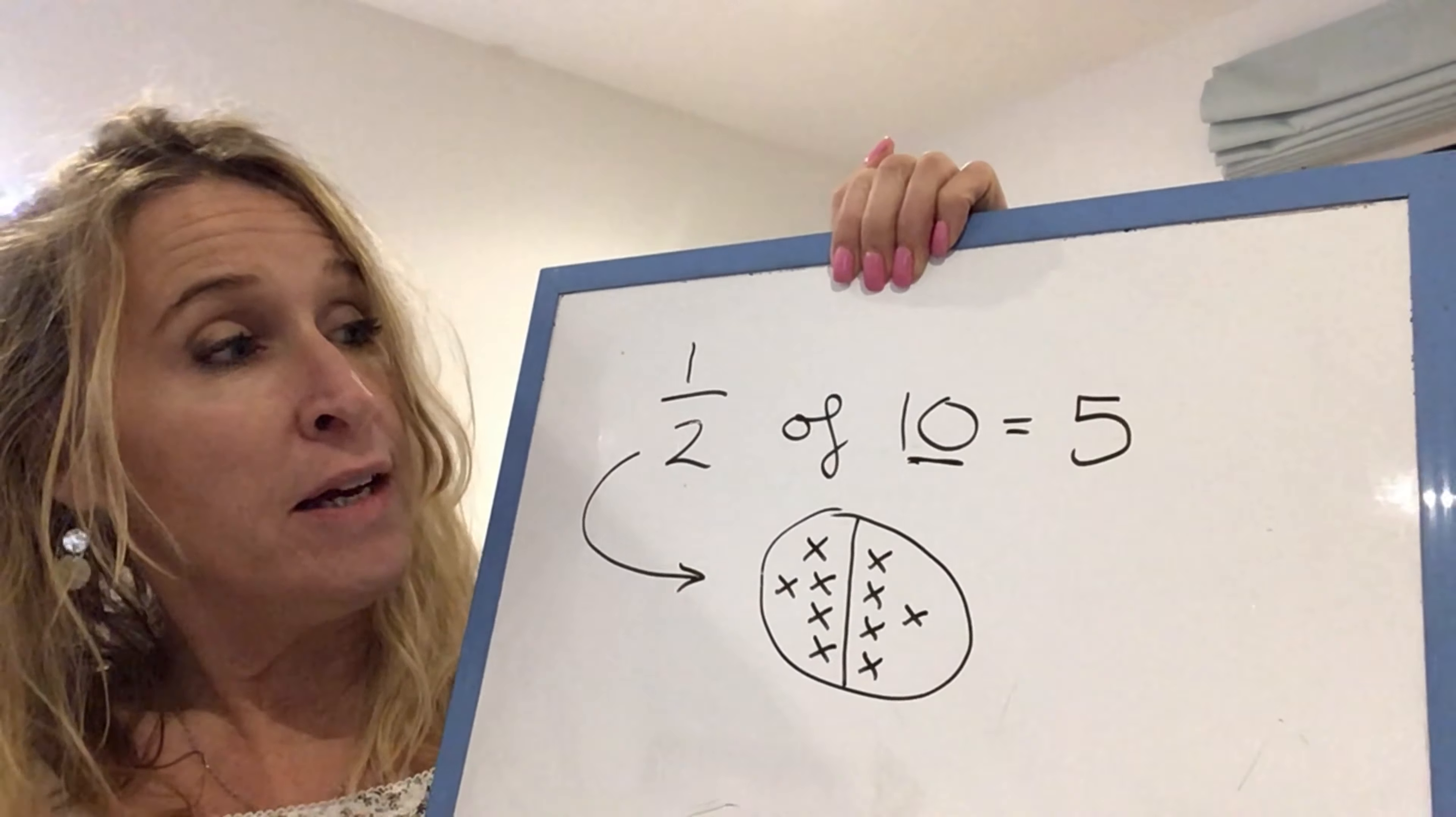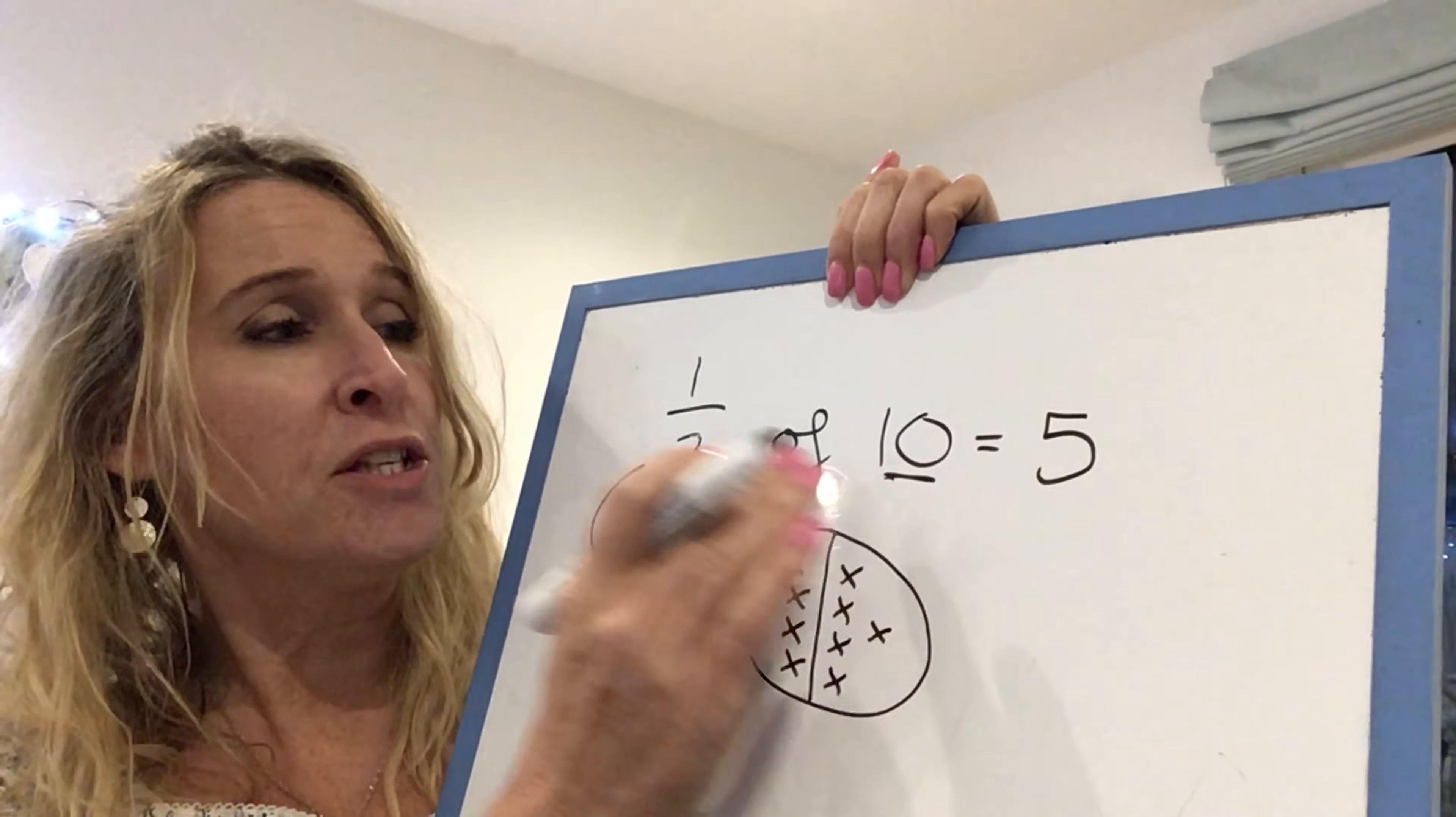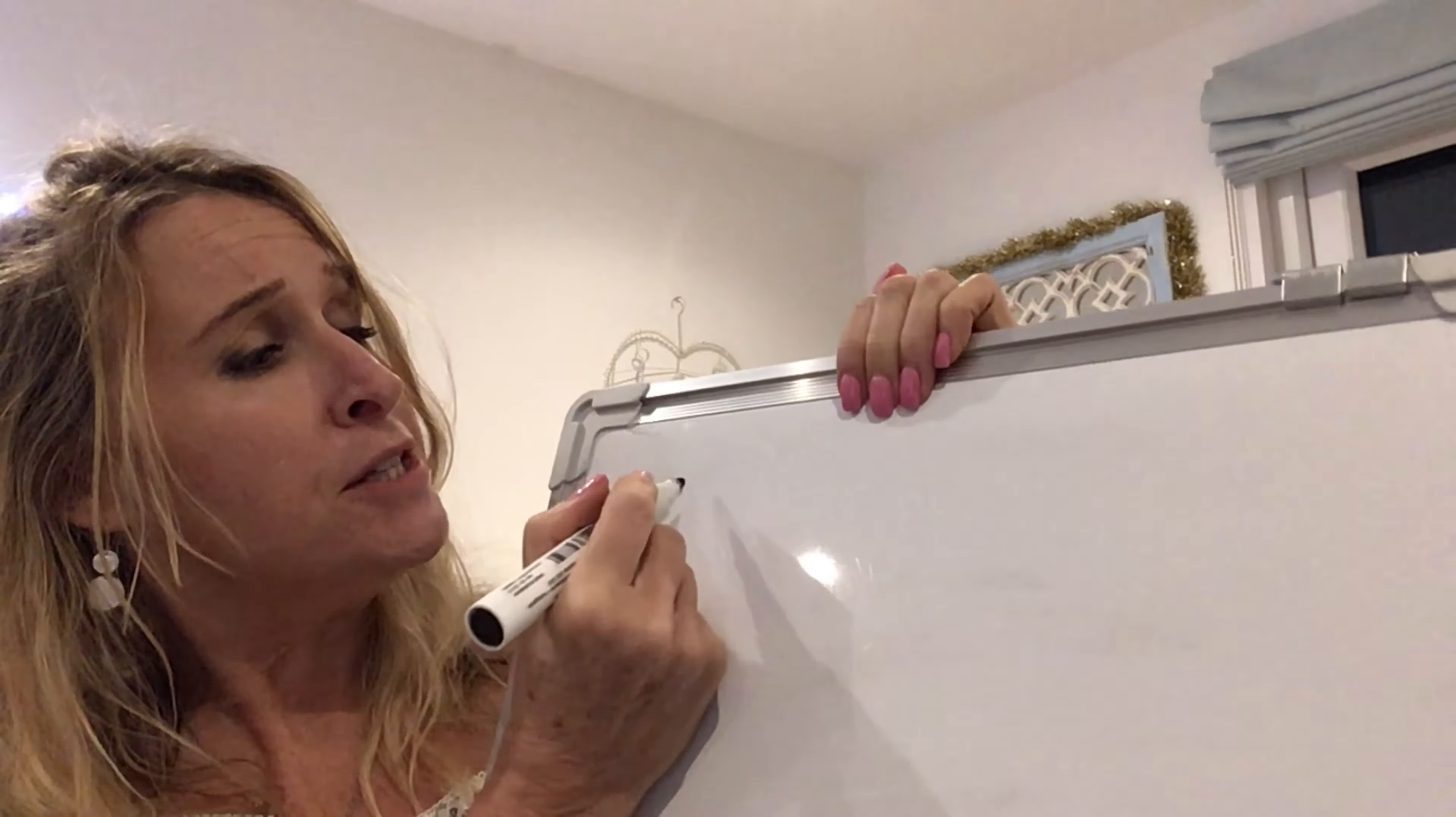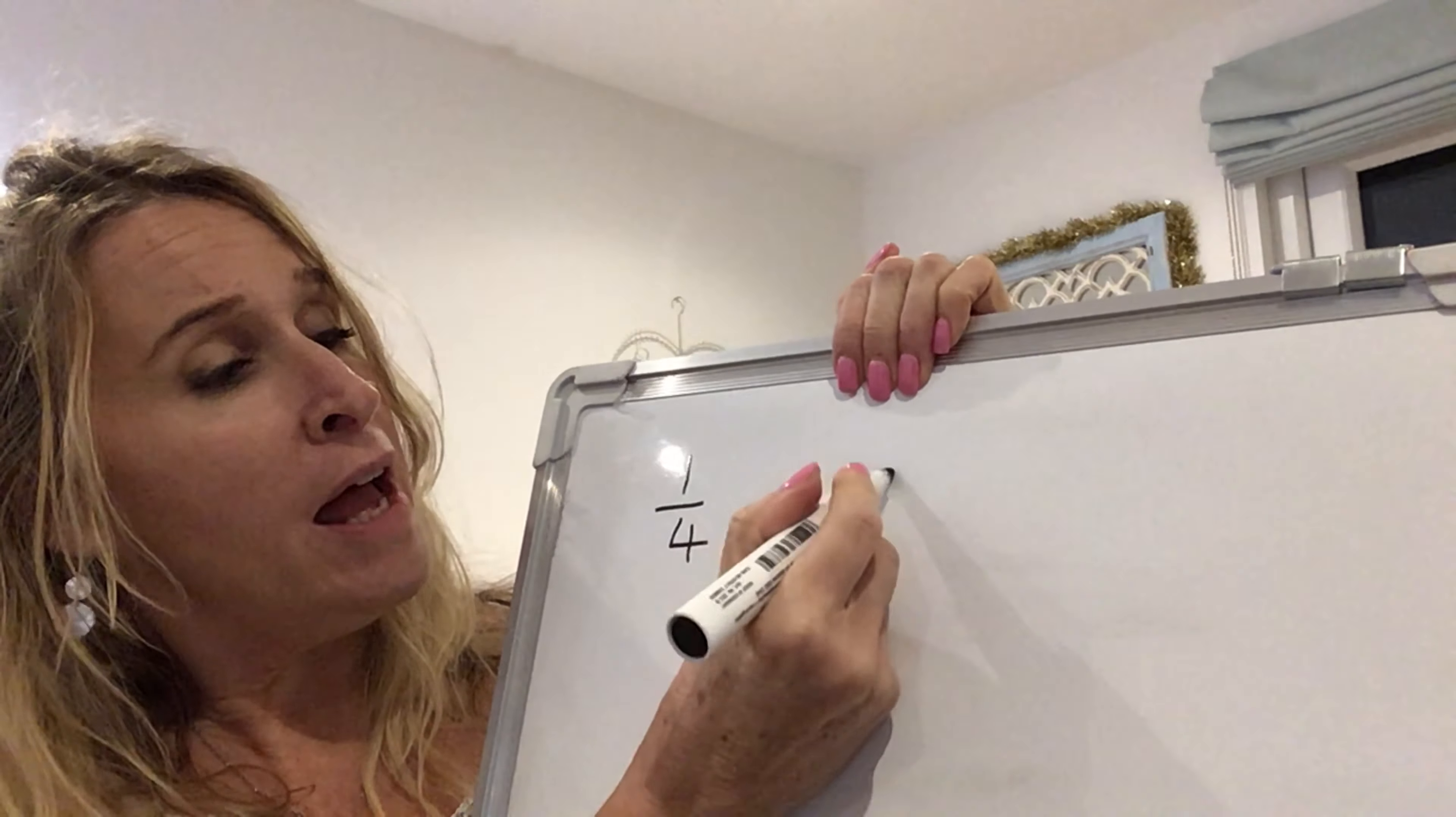Now the other thing we'd like children to do, which I won't go into today, is to know that double five goes back to 10. So we can half and double numbers. Now let's have a look at one which is a quarter or a third, because they're the fractions we need to know in key stage one.